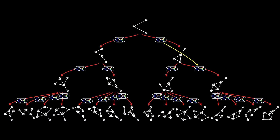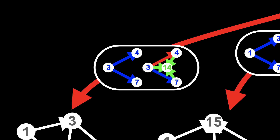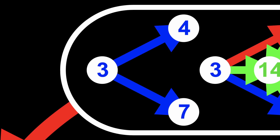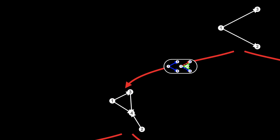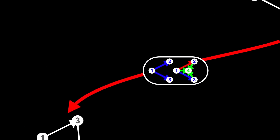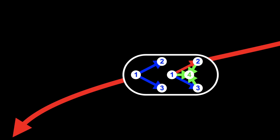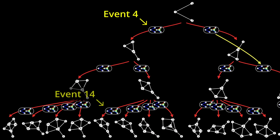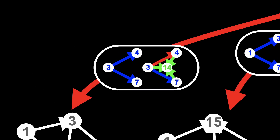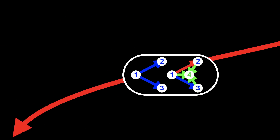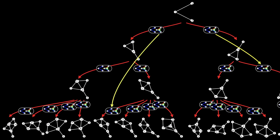Event 5 has to happen before event 9, because event 9 matches the edge from node 1 to node 5, which doesn't exist until event 5 creates it. So I'm going to add a yellow arrow from event 5 to event 9. All this yellow arrow means is that event 5 has to happen before event 9. Let me run through another example. Take this event — event 14, since it's the event that creates node 14. It matches the edge from node 3 to node 4, and the edge from node 3 to node 7. Event 14 can't happen unless those edges exist. The edge from node 3 to node 4 was created by event 4, so I'm going to add a yellow arrow from event 4 to event 14.